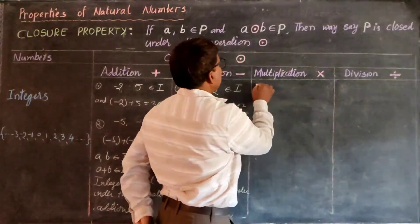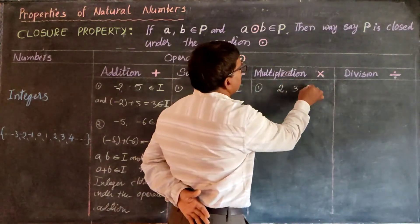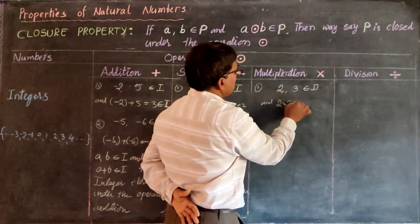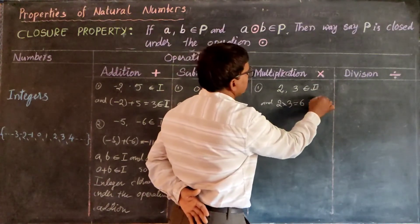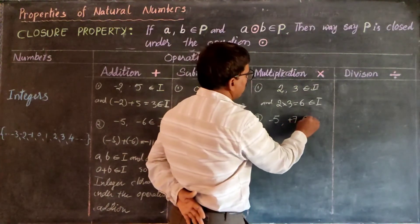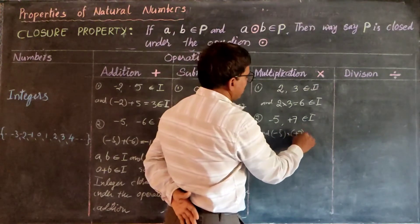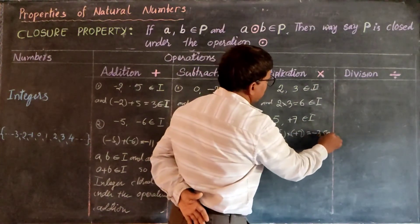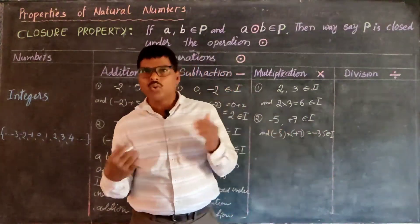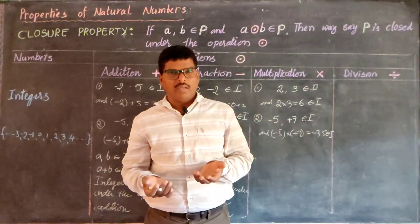Take the multiplication operation. Take two integers: 2 and 3 are integers, and 2 into 3 is equal to 6. This 6 is also an integer. Take another example: minus 5 and plus 7 are two integers, and minus 5 into plus 7 is equal to minus 35. This minus 35 is also an integer. So the product of any two integers is also an integer.